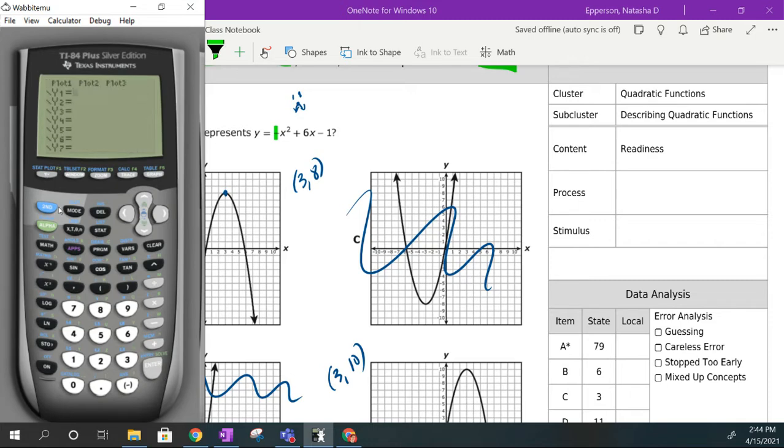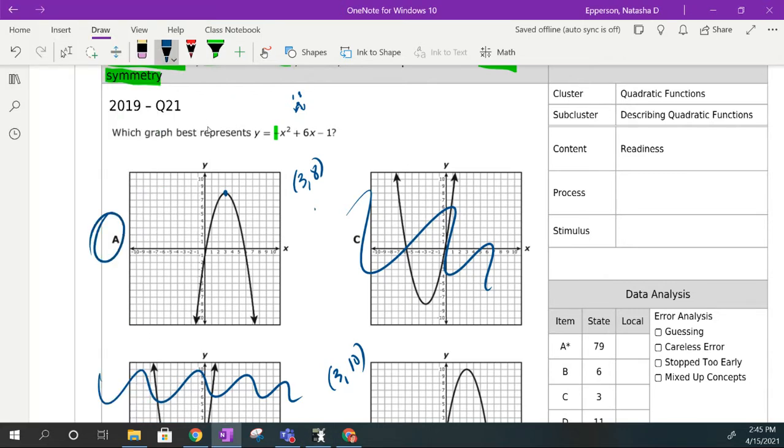I'm going to go to y equals, and I'm going to put in my equation negative x squared plus 6x, and then I'm going to use this minus to say minus 1, and then I'm going to go to second graph, and I want to go to where x is equal to negative 3. When x is negative 3, I want to check to see if it's 8 or 10. That would tell me which one I need to pick. This says 8, so that gives me my answer choice A.